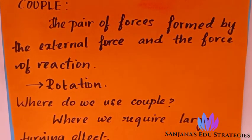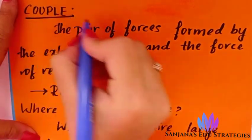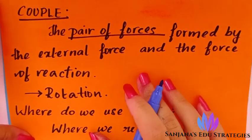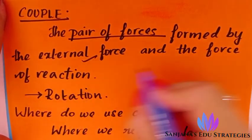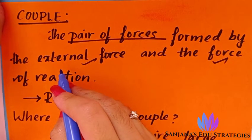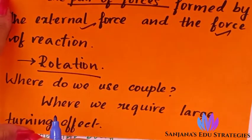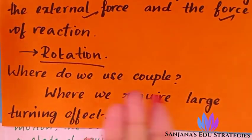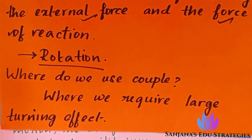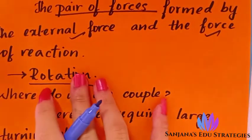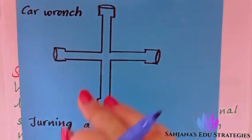Now we will see the next topic: couple. From the word itself, you can understand it refers to a pair. Here, couple refers to a pair of forces — one is the external force and another is the force of reaction. This couple produces rotation and is used where a large turning effect is required.